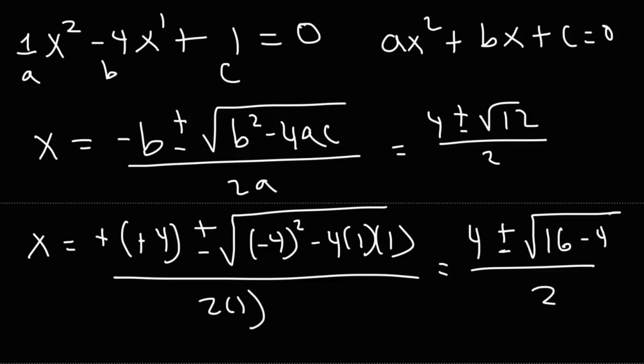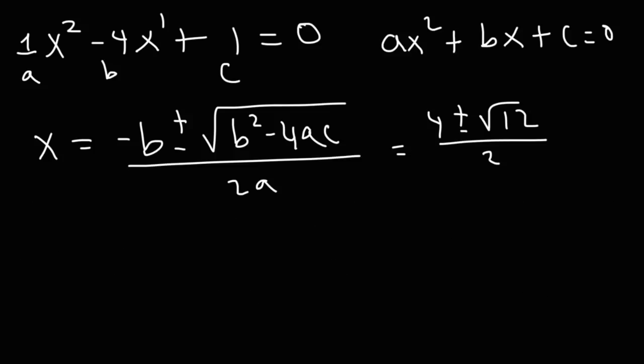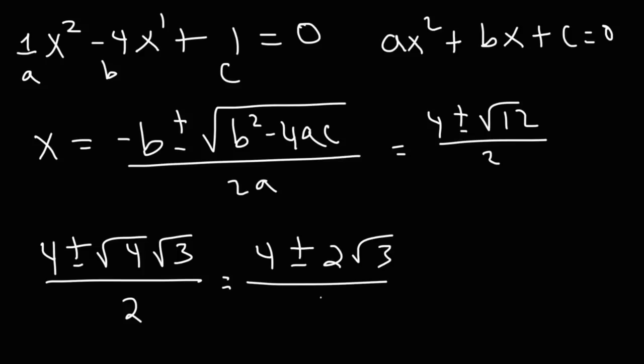So at this point, we need to simplify the square root. The square root of 12, we can write that as the square root of 4 times the square root of 3, because 4 times 3 is 12. And the square root of 4 is equal to 2. So now what we want to do is divide each number by 2. We want to divide 4 by 2 and 2 square root 3 by 2. 4 divided by 2 is 2. And 2 divided by 2 is 1. So that leaves behind the square root of 3. So we're going to get two possible answers.